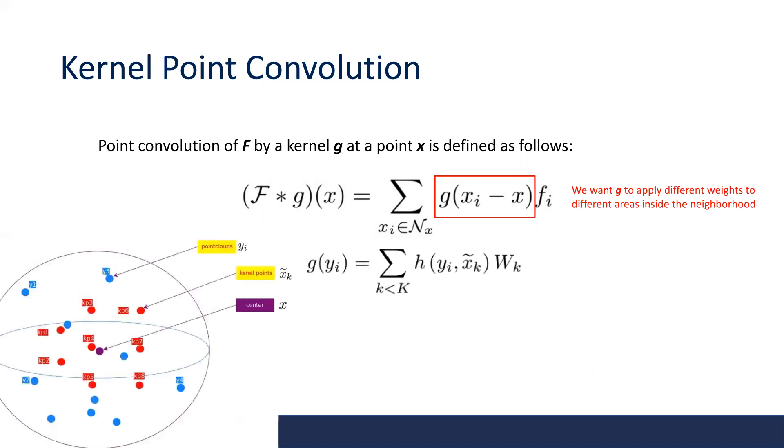In 2D convolution, the function g is usually defined as a 3 times 3 weight matrix. Here in KPConv, g is defined by k support points, also known as kernel points. Each kernel point x_tilde has a learnable weight w multiplied by a correlation factor h that measures how much this kernel point and each neighboring point y_i are correlated with one another.